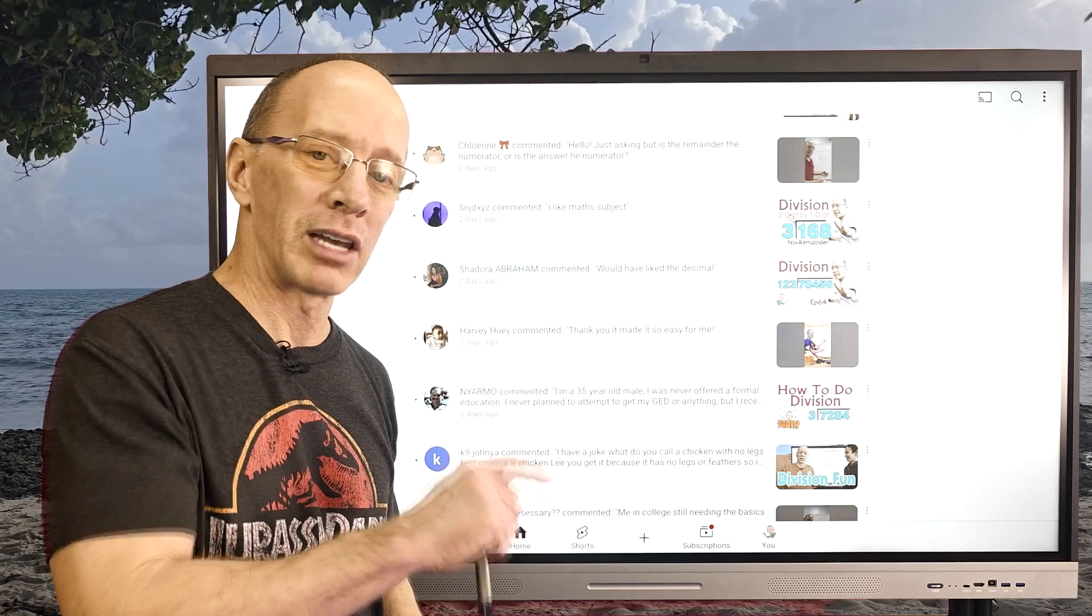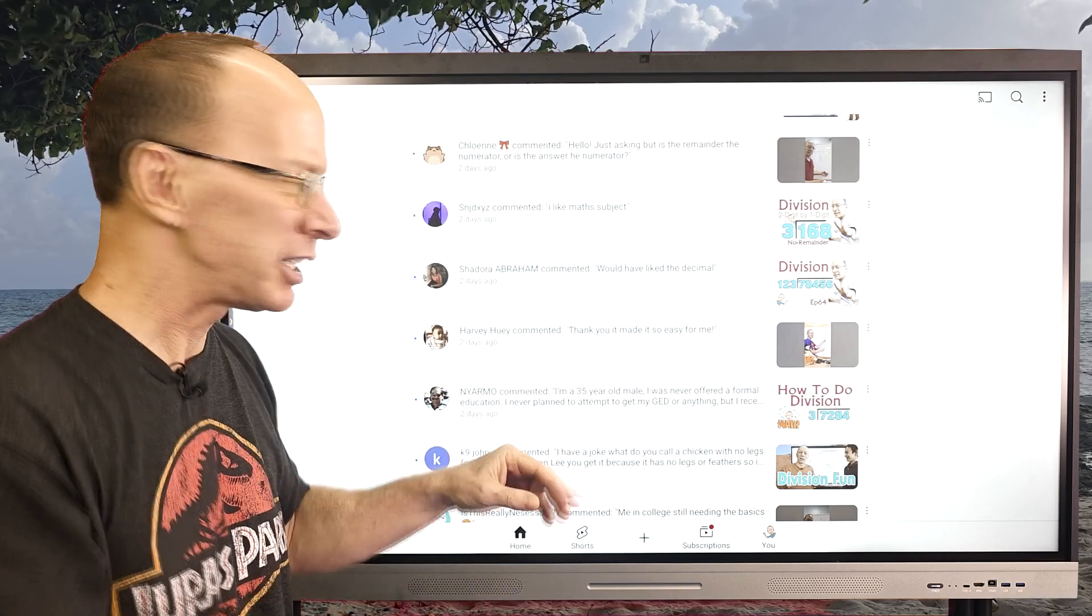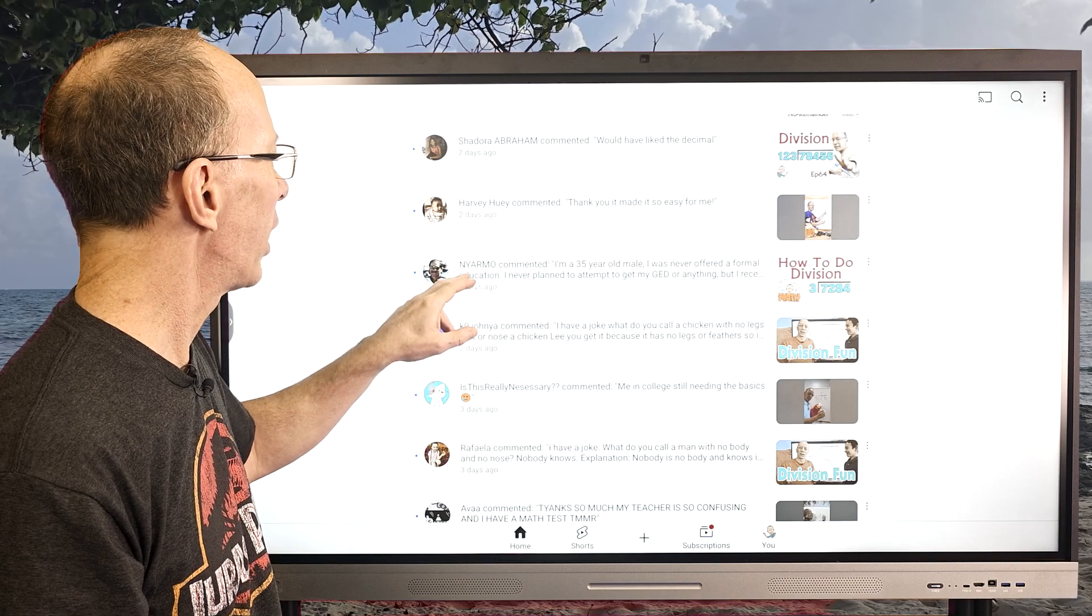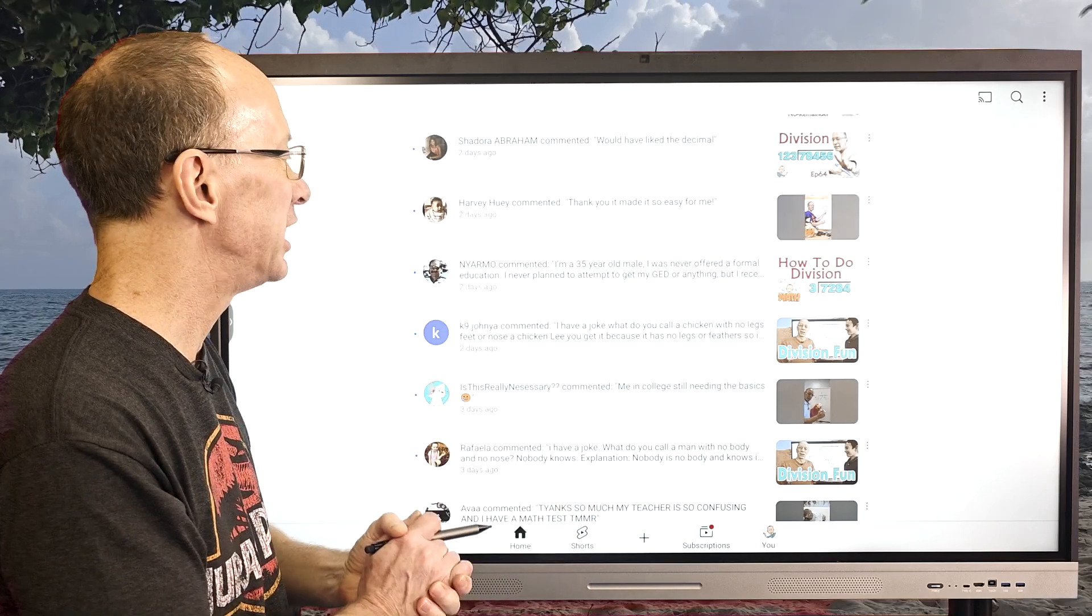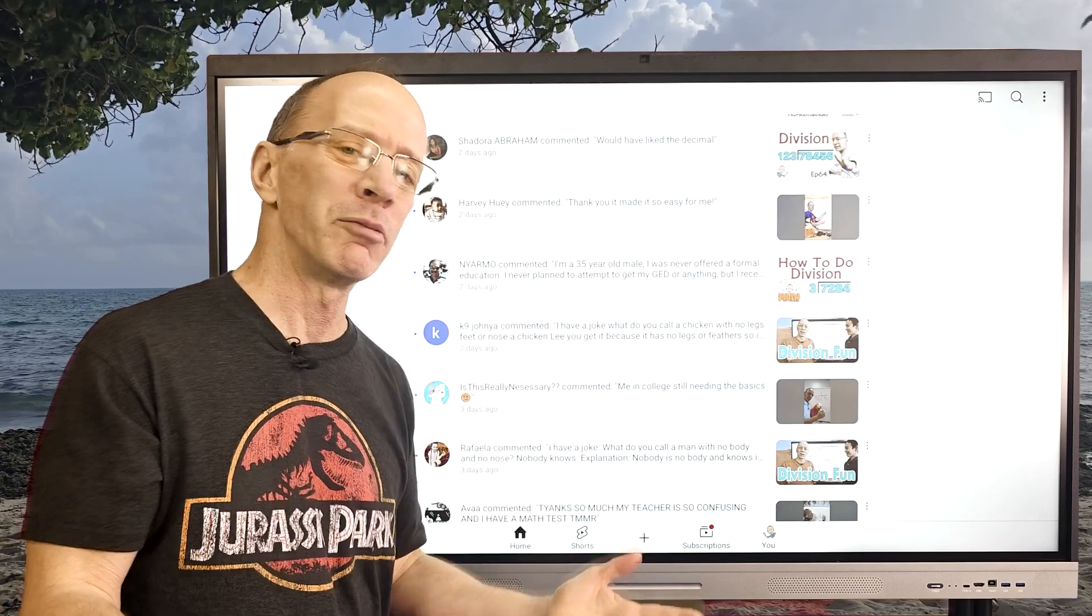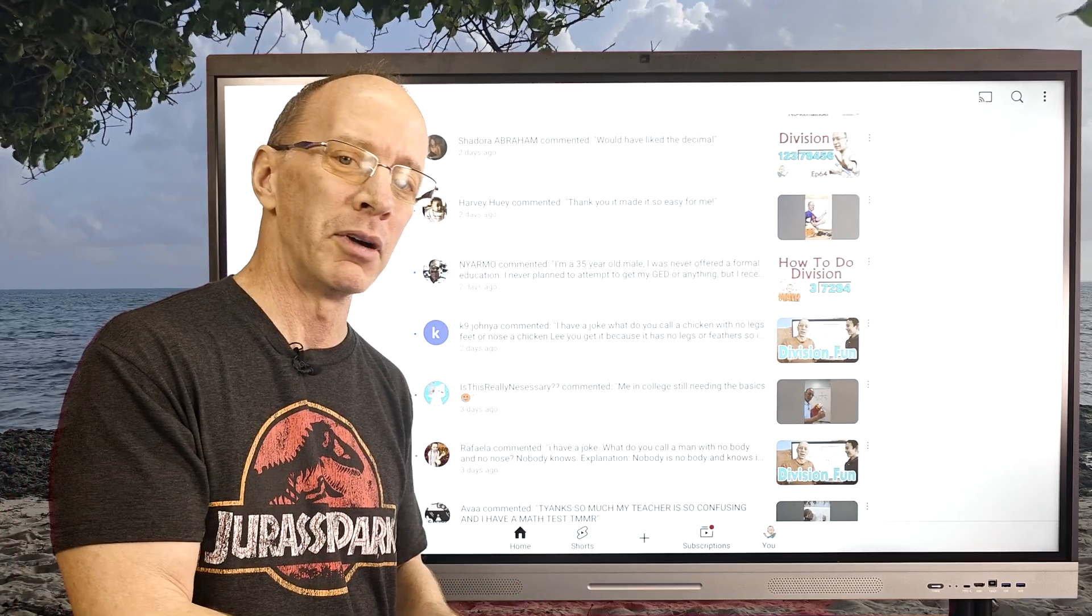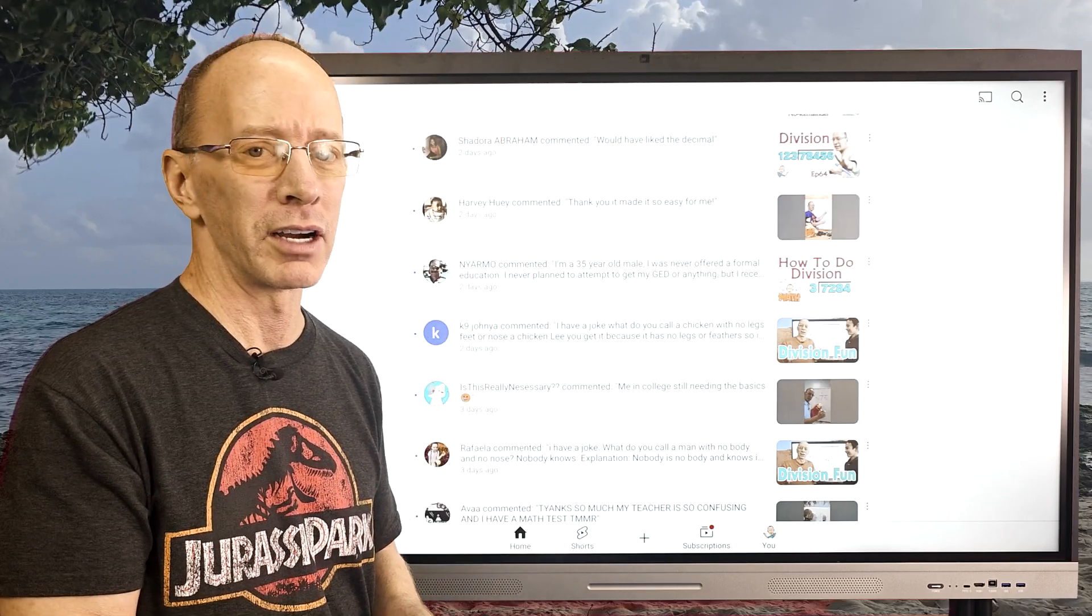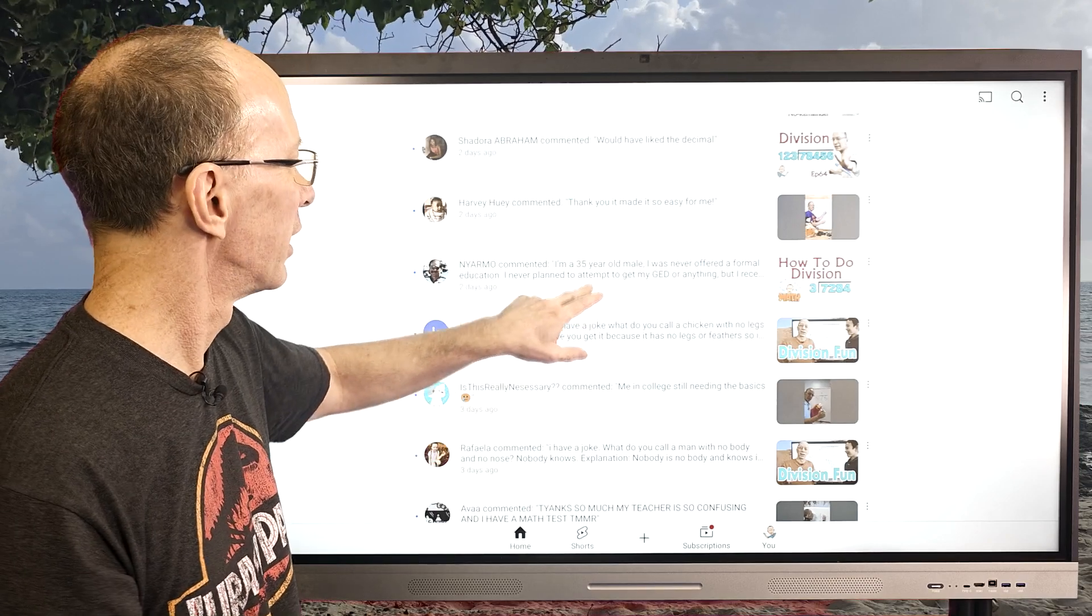We got Mighty Patrol, it's kind of fun looking at some of these names. Angel, Betty, Shuddora. Again, they said that they would have liked me to do a decimal. I do have problems on here that I do take the division problems and turn them into a decimal, so check that out. I believe it's Nyarmo, says I'm 35 years old, going for his GED. Awesome, that is awesome. It's never too late.